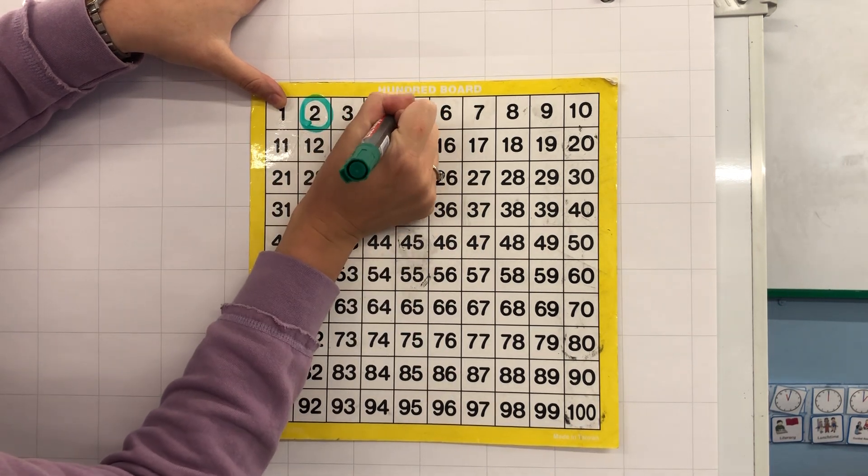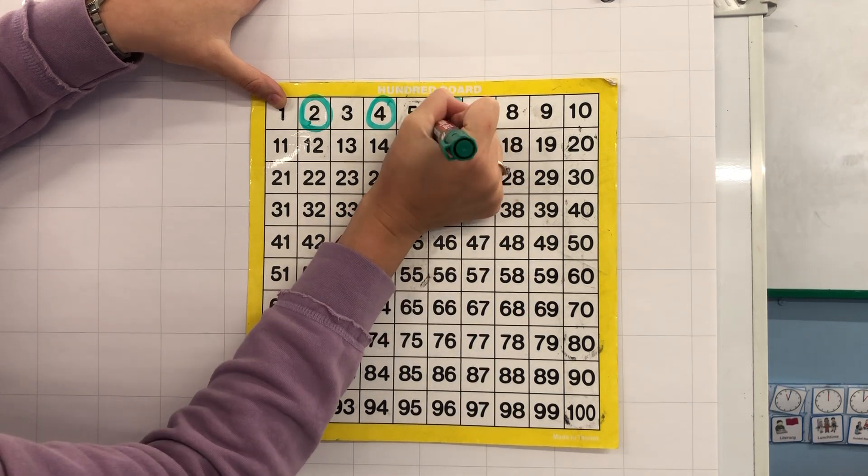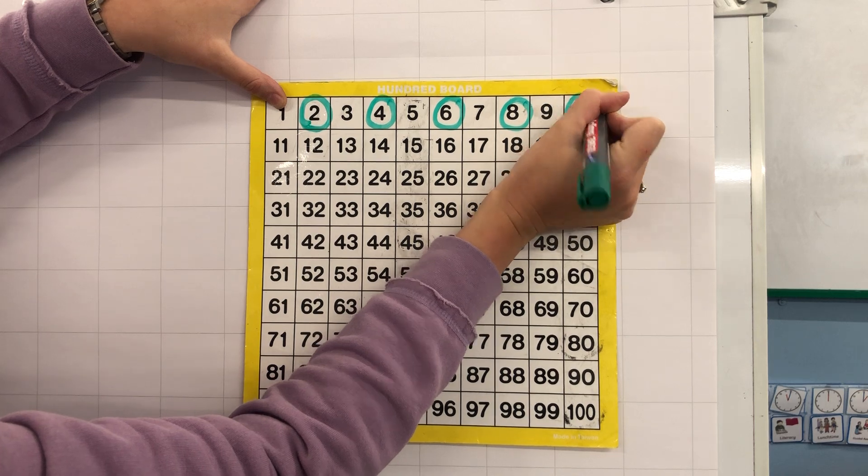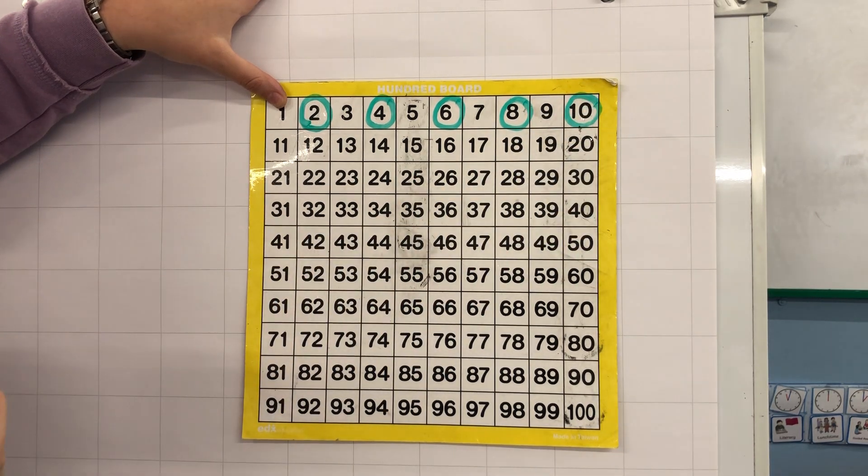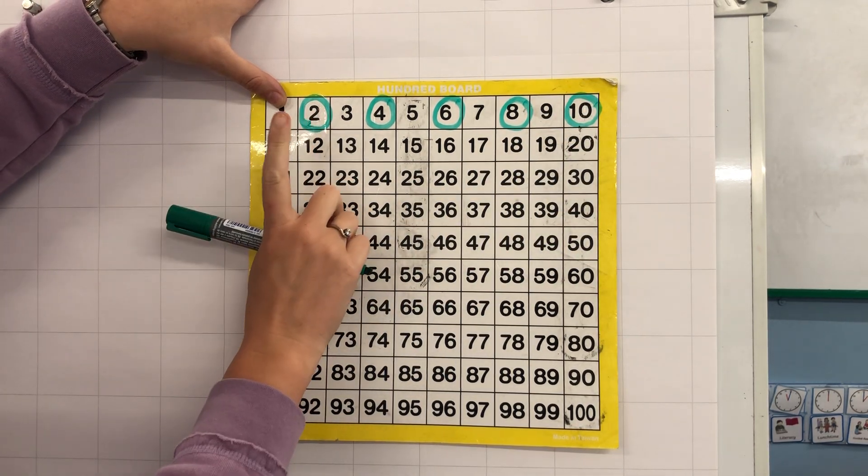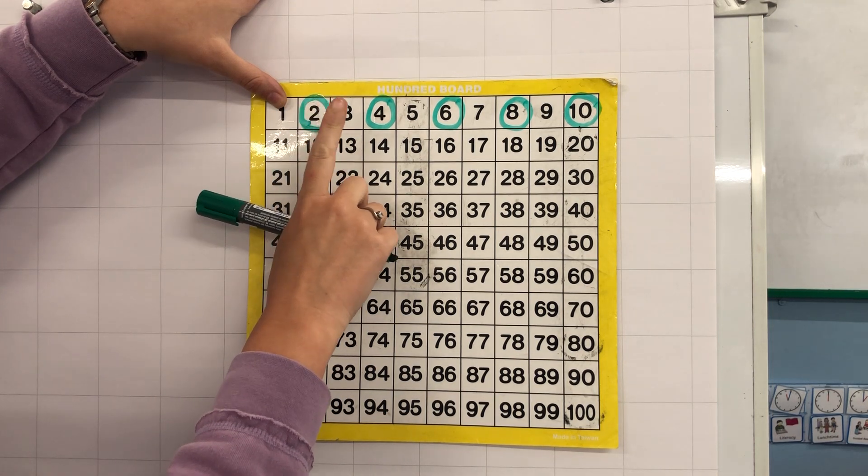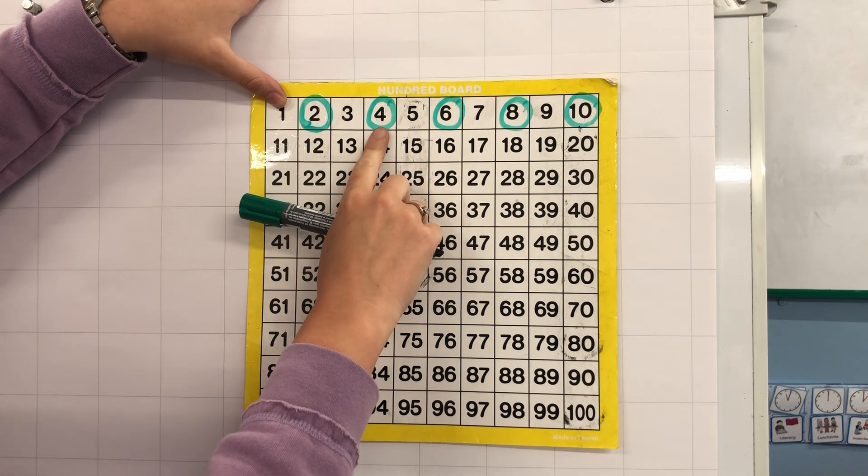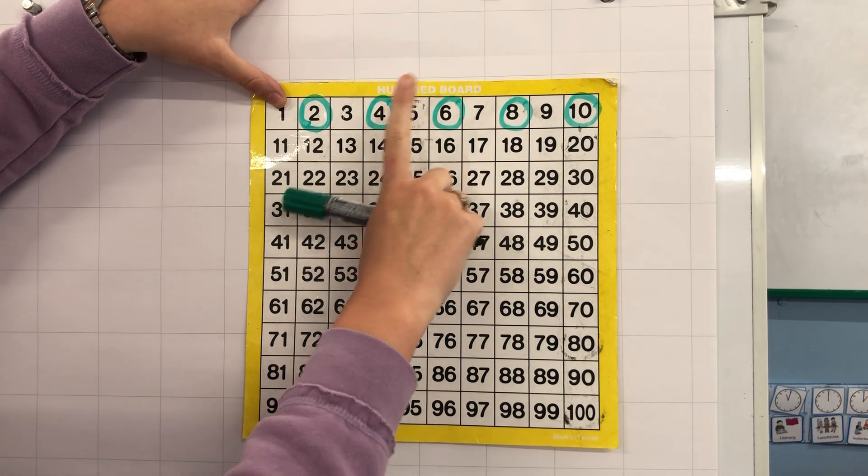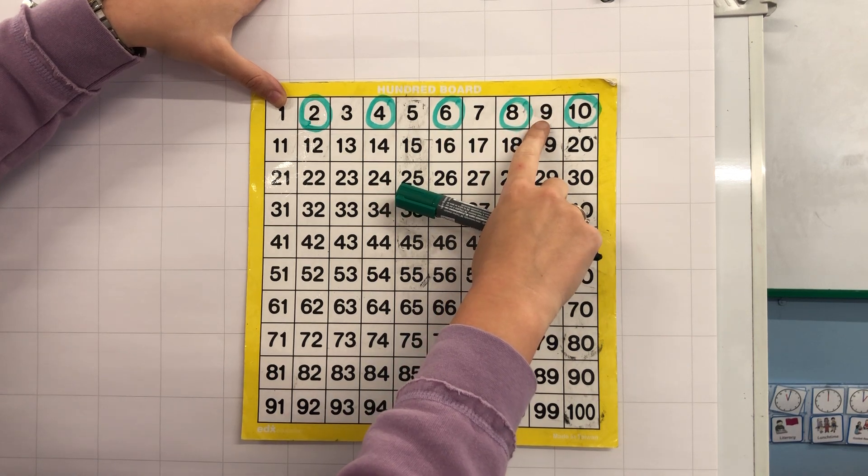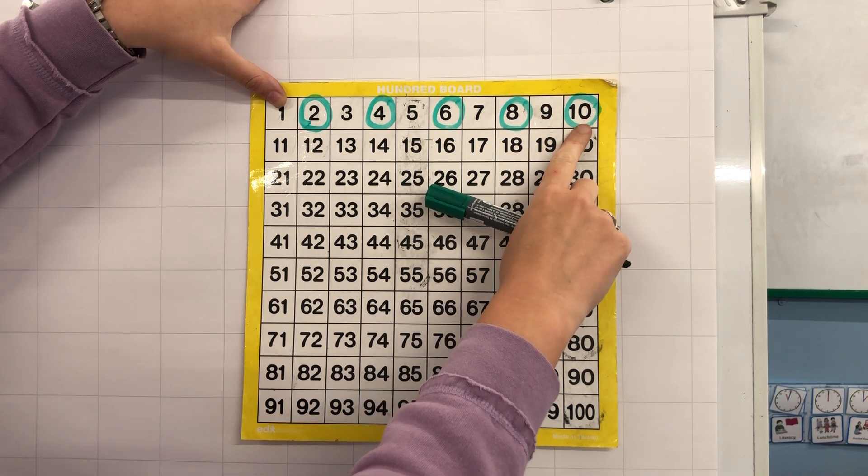2, 4, 6, 8, 10. When counting in 2's a quick trick to help you is to count 1, miss 1, count 1, miss 1, count 1, miss 1. So I have counted 10.